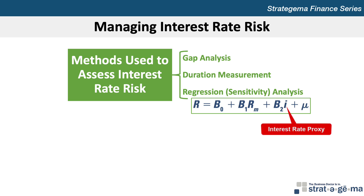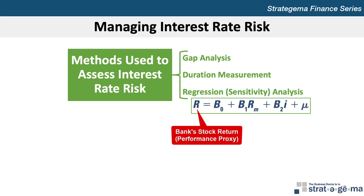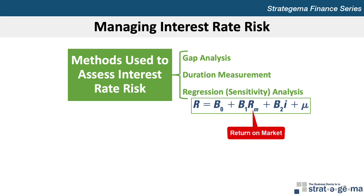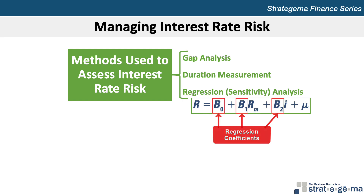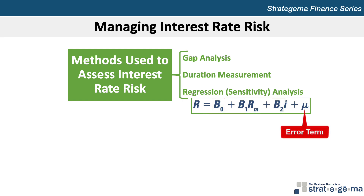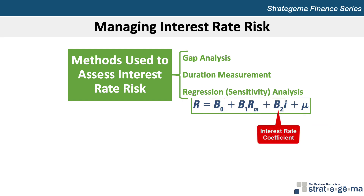For example, using an interest rate proxy called I, the S&P 500 stock index as the market proxy, and the bank's stock return R as the performance proxy, the following regression model could be used where RM is the return on the market, B0, B1, and B2 are regression coefficients, and mu is an error term. The regression coefficient B2 in this model can also be called the interest rate coefficient because it measures the sensitivity of the bank's performance to interest rate movements.